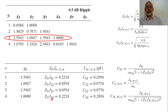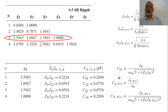From the values of the admittance inverters, we can obtain the coupling capacitors using the corresponding relations. The coupling capacitors for the two ends: the first end is given by one relation, and the last end by another relation. For the intermediate capacitors, a third relation is used. So we obtain the coupling capacitors C01, C12, C23, and C34.